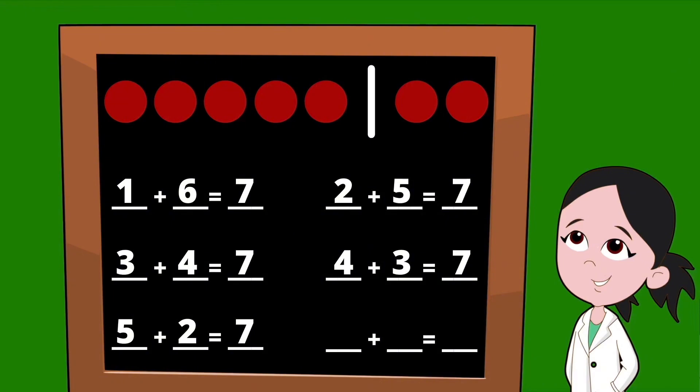Let's go ahead and slide that line over just one last time. On the left of our line, we now have six dots, so we'll start this set of partners with the number six. On the right side of our line, we have just one dot, so our other partner is going to be the number one. Six plus one equals seven.